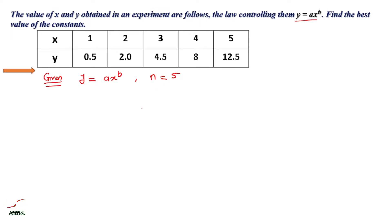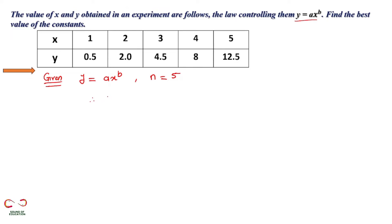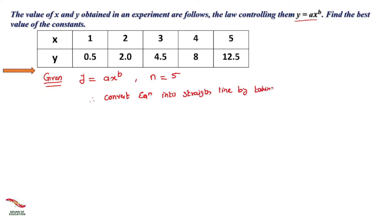In the last session we saw the first type of power equation y is equal to ax raised to b, and we converted it into a straight line equation. Similarly, here you have to complete the same process. You have to convert this equation into the straight line equation by taking log of both sides.